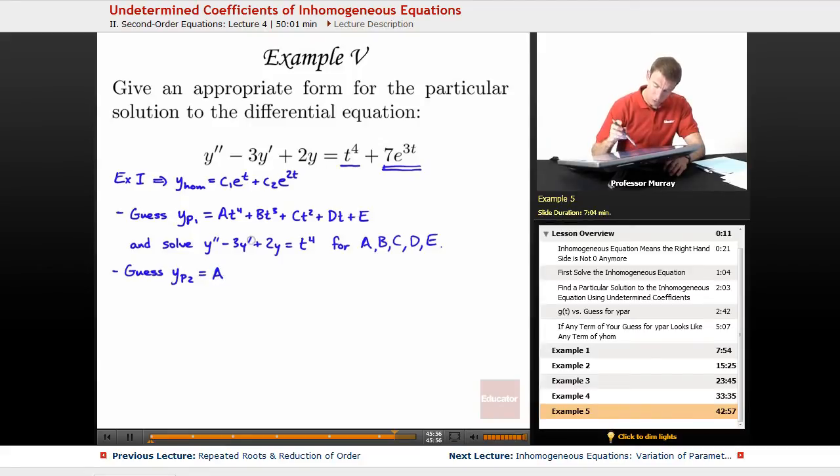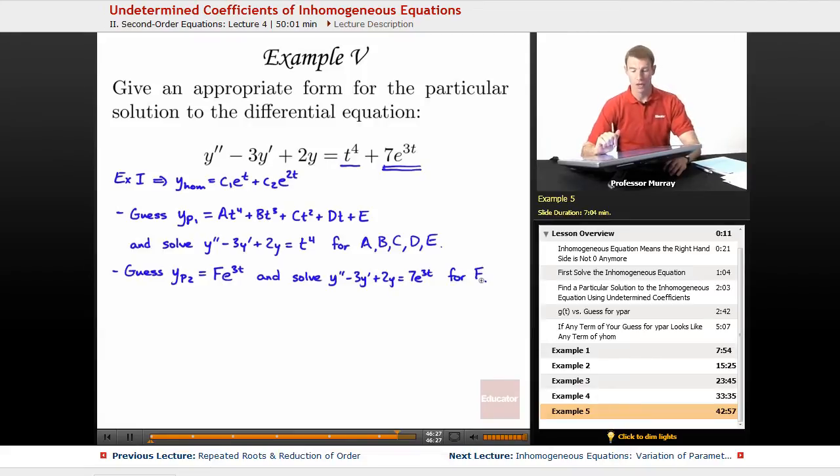I'm going to guess generically. Well, I don't want to use A again because I already used A above. So, I'll use F*e^(3t). And then you would find the first derivative, second derivative, plug it in, and solve y'' - 3y' + 2y = 7e^(3t). We would solve that for capital F. So, that would give us a particular solution that matched up the e to the 3t part of the equation.